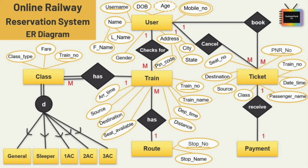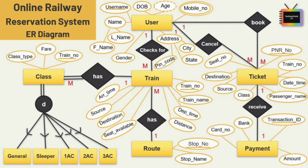For the route entity I have added two attributes: stop number and name, with stop number as the primary key. For the payment entity I am adding four attributes: transaction ID, amount, bank, and card number, with transaction ID as the primary key.